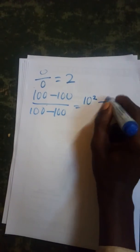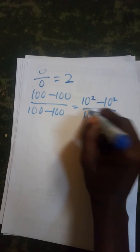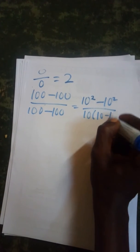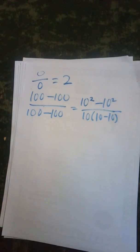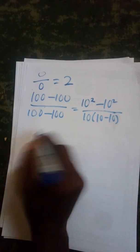is 100, minus another 10 squared, all over 10 into 10 minus 10, which is also 100. So here is